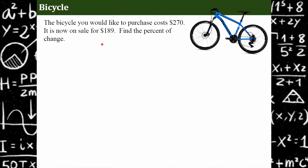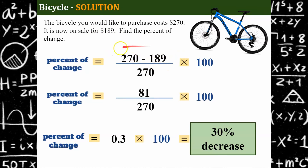You're going to buy a bike. Read through this problem and try to find the percent of change, then hit play when you're ready to check your work. The bike you'd like to purchase costs $270 and is now on sale for $189. The amount that's different is 270 subtract 189, and the original amount was 270. It dropped $81. 81 divided by 270 is 0.3 — written as a percent, that's a 30 percent decrease. The bike went on sale for 30 percent off.